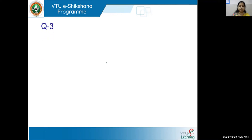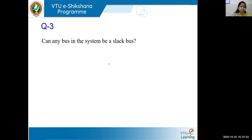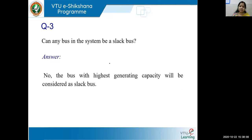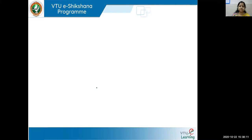Question three: Can any bus in the system be a slack bus? The answer is no. The bus with the highest generating capacity must be considered as the slack bus, because that particular bus has to supply the losses in the transmission lines.